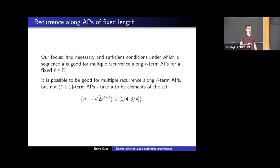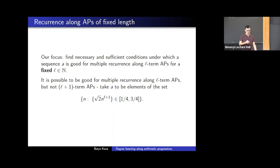There is good reason to study this question because there are well-known examples of sequences which are good for recurrence along L-term progressions, but not L+1. For instance, you can take an irrational polynomial and take those values of the polynomial contained in some subset of the torus — for this type of sequence, we get recurrence along L-term APs, but not APs of length L+1. This is the main question for the first part of the talk.